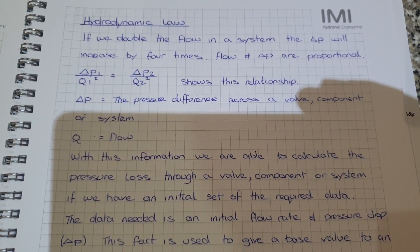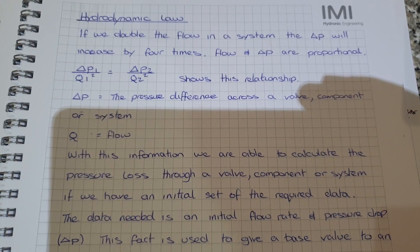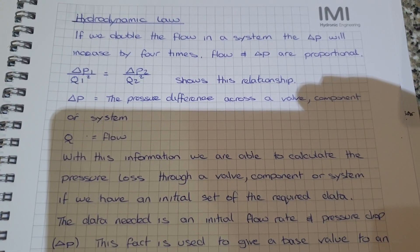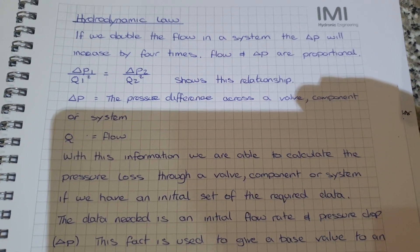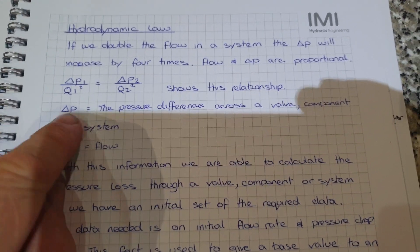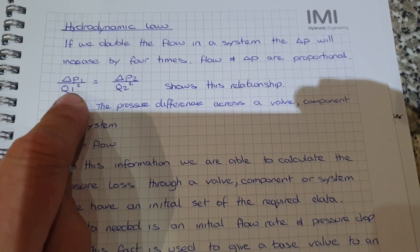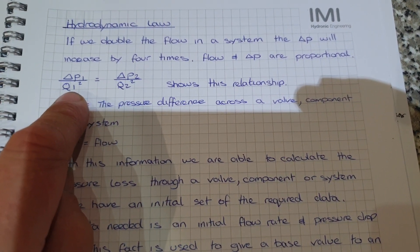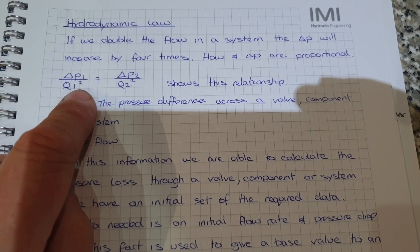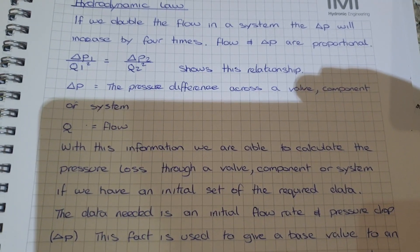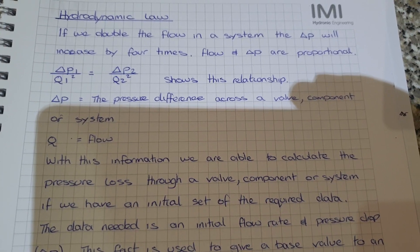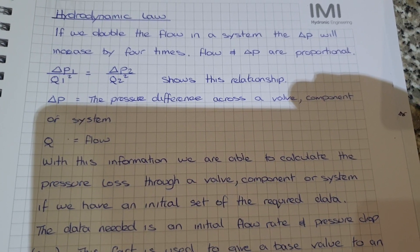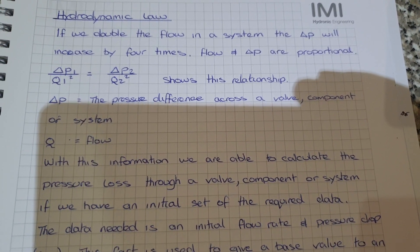So, hydrodynamic law: if we double the flow in a system, the delta P will increase by four times. Flow and delta P are proportional. The relationship is shown by the following formula: delta P1 divided by Q1 squared equals delta P2 divided by Q2 squared.